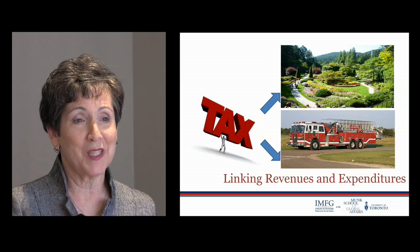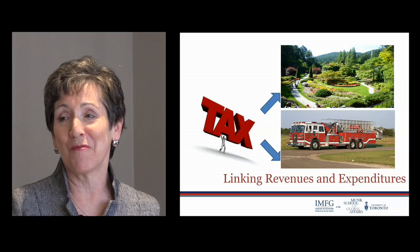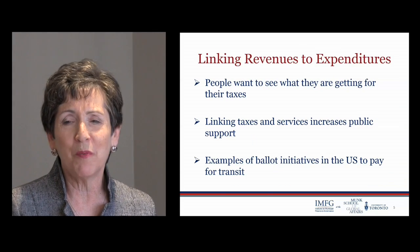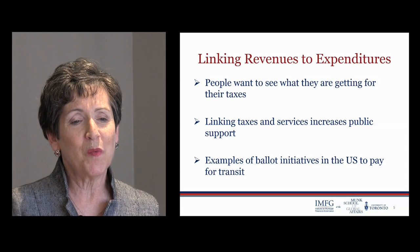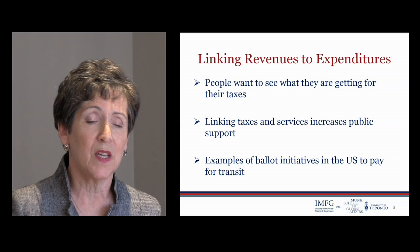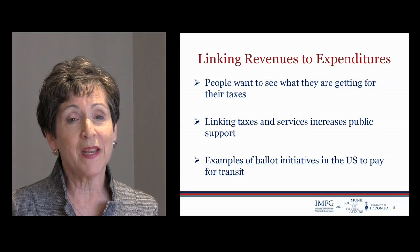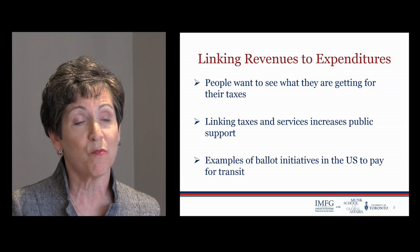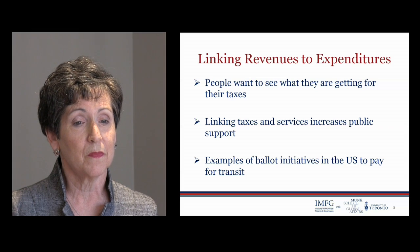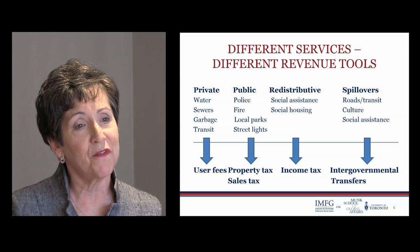Let's begin by looking at linking revenues and expenditures. We can see a person bearing the burden of the tax — what are they getting for those tax revenues? In this slide they're getting a beautiful park and fire protection. The point is that people want to see what they're getting for their taxes. When we link taxes and services, people are more supportive of paying those taxes. We have examples in the United States where states have held referenda, or ballot initiatives, to see if people will pay more for transit — for example, will you pay another 1% of sales tax for improved transit? They're clearly linking the service with the tax being asked.